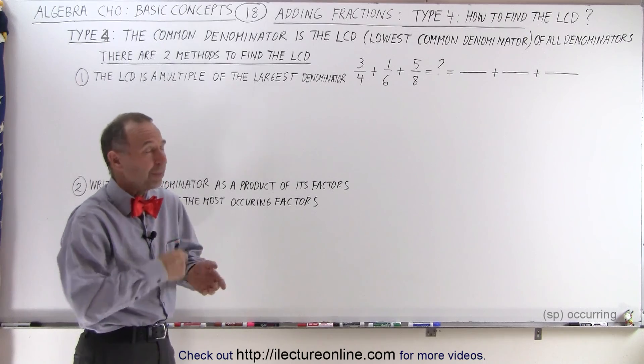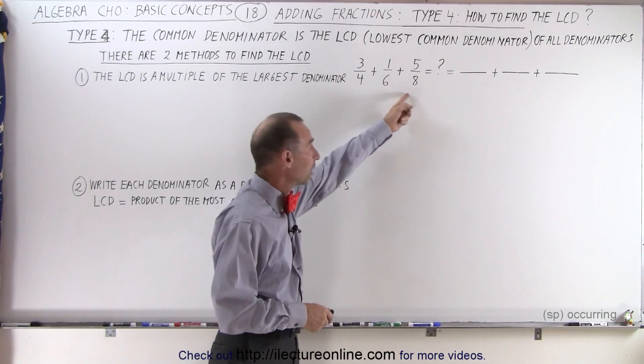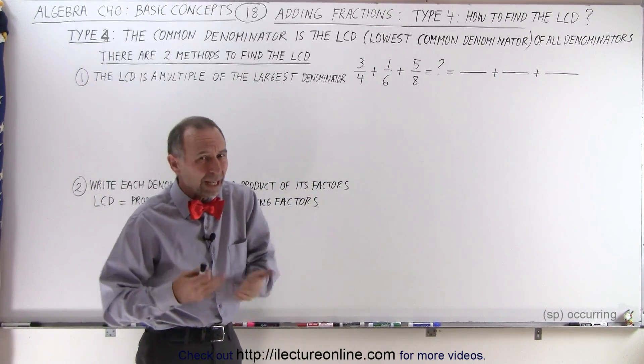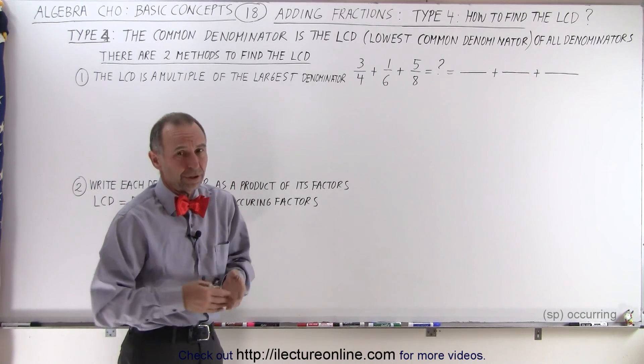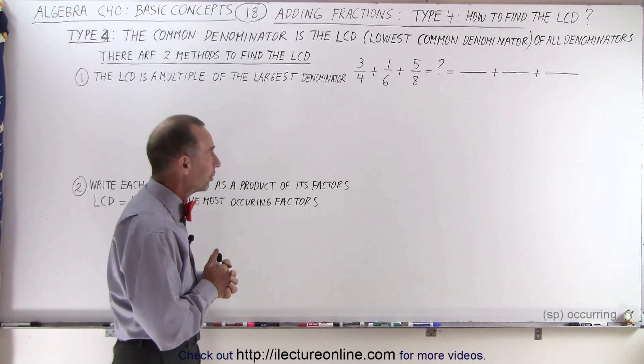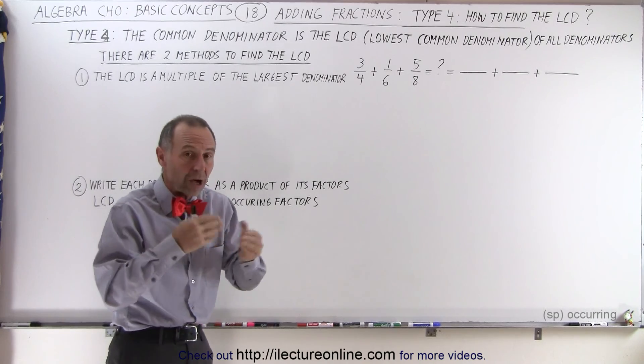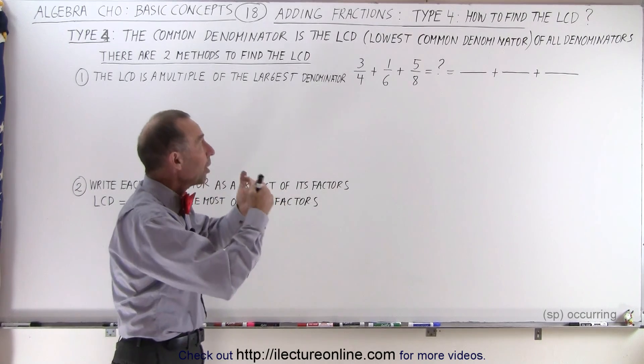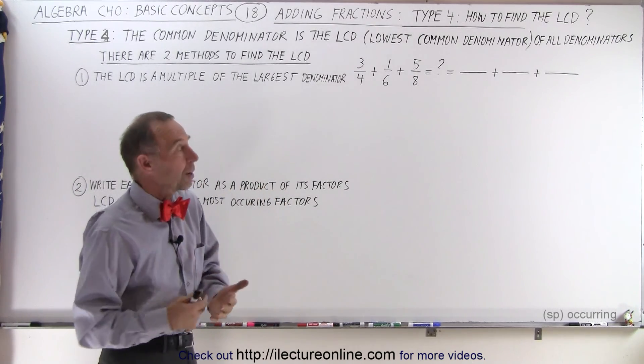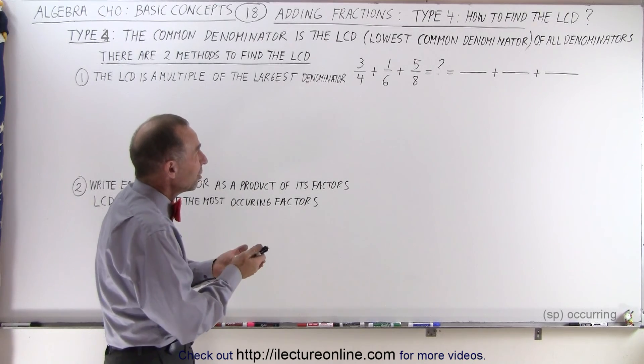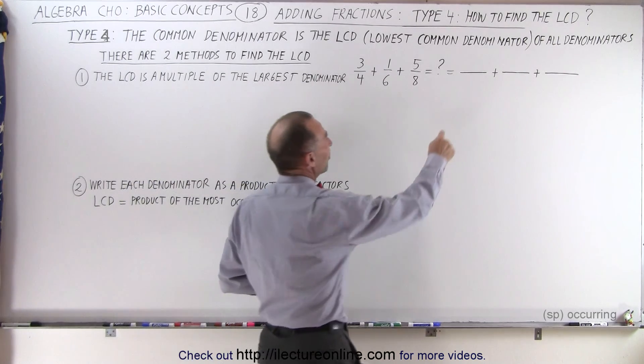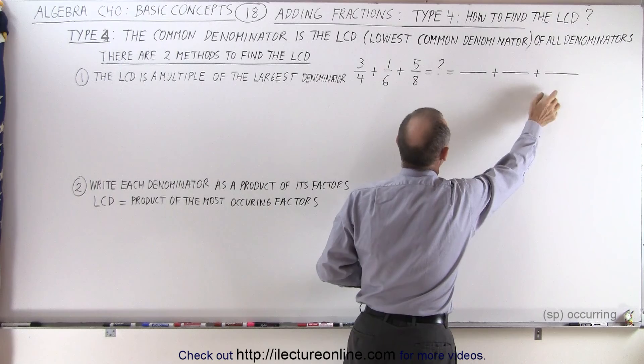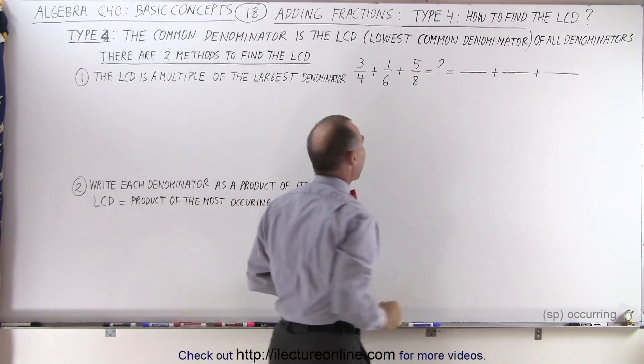Now we could solve this one like we did before by simply multiplying all the denominators together, but we wouldn't end up with a very large denominator with very large numbers, which makes it more difficult. It's better to find the denominator which is common to all but the smallest possible. That's called the lowest common denominator. So the question then is, how do we find that? How do we find the denominators here so that we can easily add these fractions?